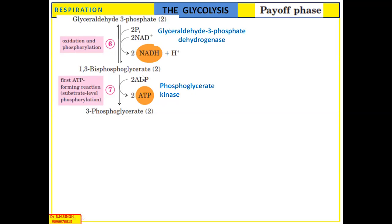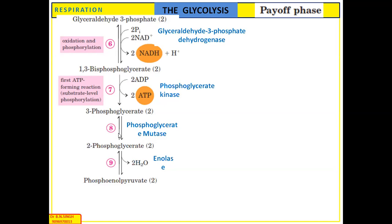1,3-bisphosphoglycerate undergoes substrate-level phosphorylation. There are two substrate-level phosphorylations that occur due to glycolysis. The first substrate-level phosphorylation occurs at step 7. 1,3-bisphosphoglycerate in the presence of phosphoglycerate kinase forms 3-phosphoglycerate. The phosphate from this substrate is given to ADP to form ATP. Since two molecules of glyceraldehyde-3-phosphate participated, each subsequent reaction occurs twice.